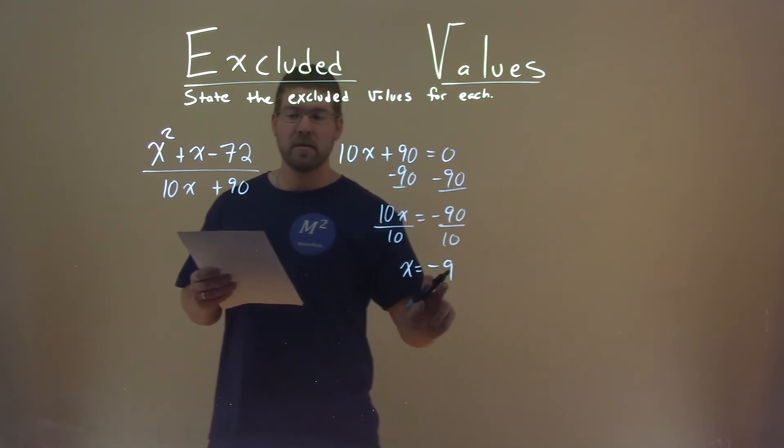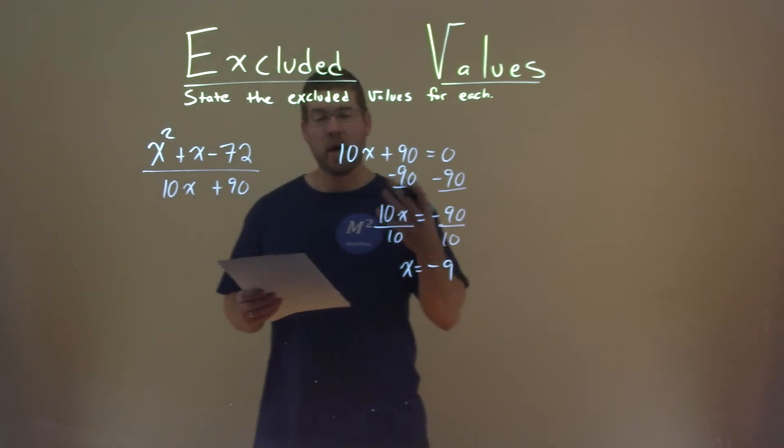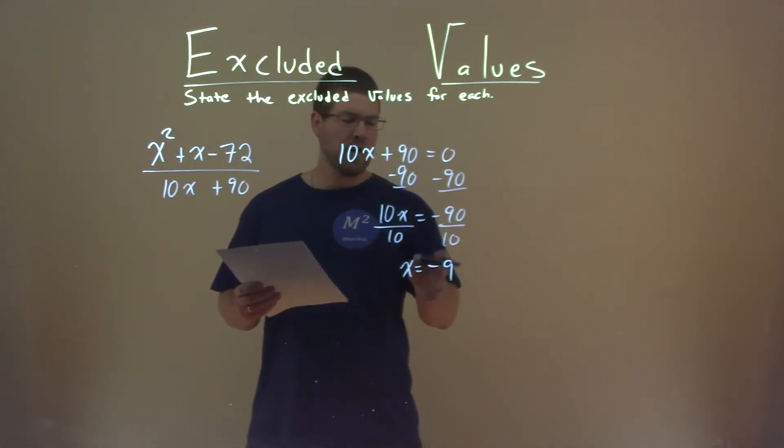So negative 9 is when, for the x value, we plug in the denominator, is where the denominator equals zero. So negative 9 is our excluded value.